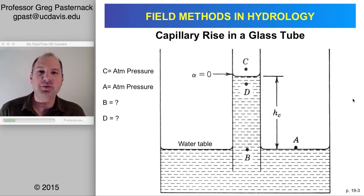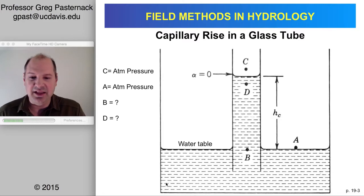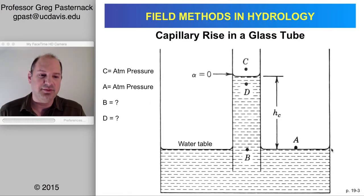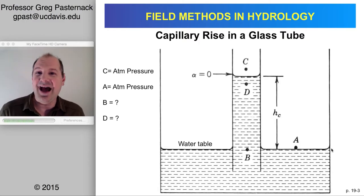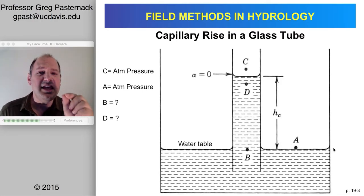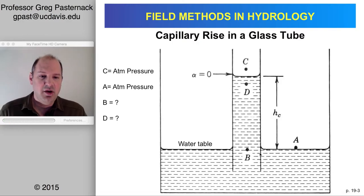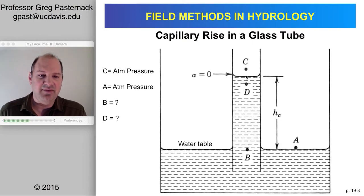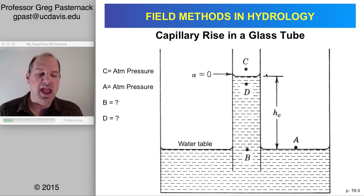To set this up, consider a simple experiment. Imagine a glass beaker filled with water to about a quarter full. Because the water is in a beaker, it's not flowing — it just has a flat water surface, maybe a little meniscus around the side. Now take a thin tube and stick it into the middle of this beaker and let it sit there. What will happen is that water will rise into the tube up to some height HC, and it might also have a little meniscus around that.